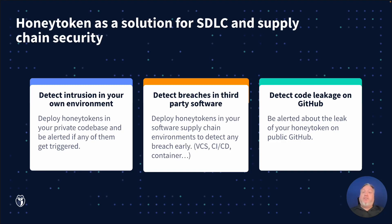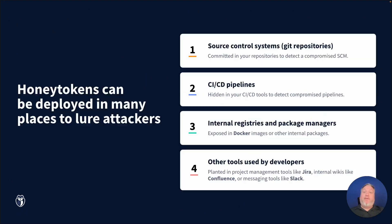Honey tokens in your source code can also be a quick way to detect when your code has been leaked. GitGuardian can quickly show you if a Honey token is exposed publicly, indicating a secret leak.